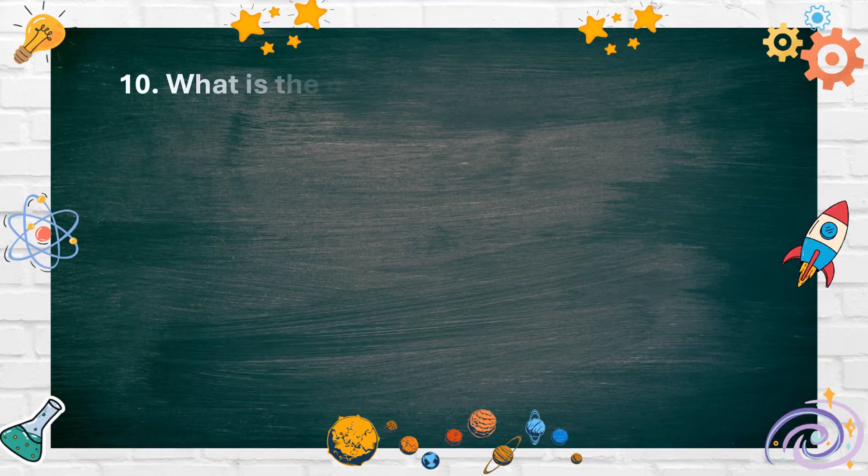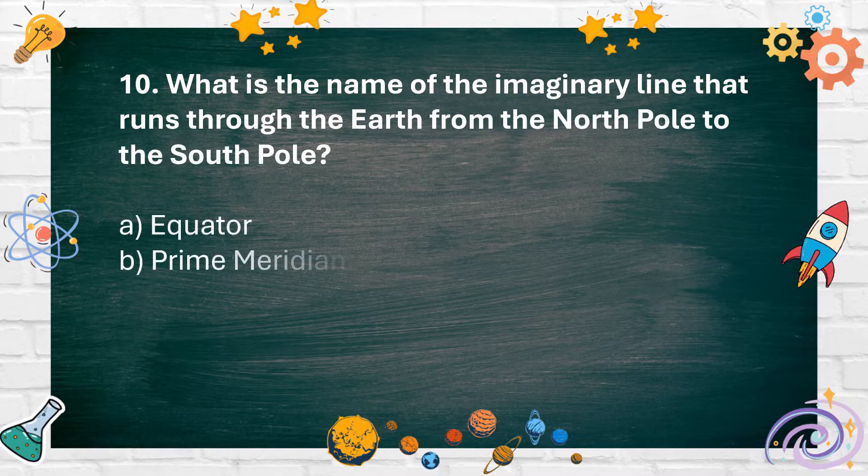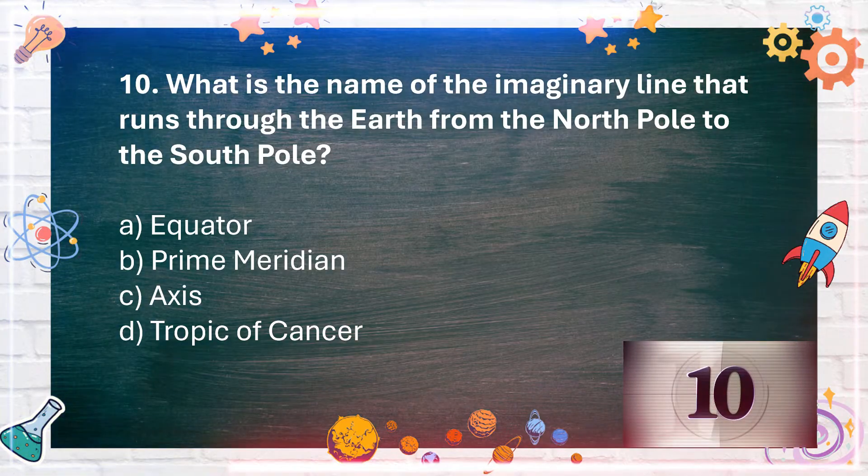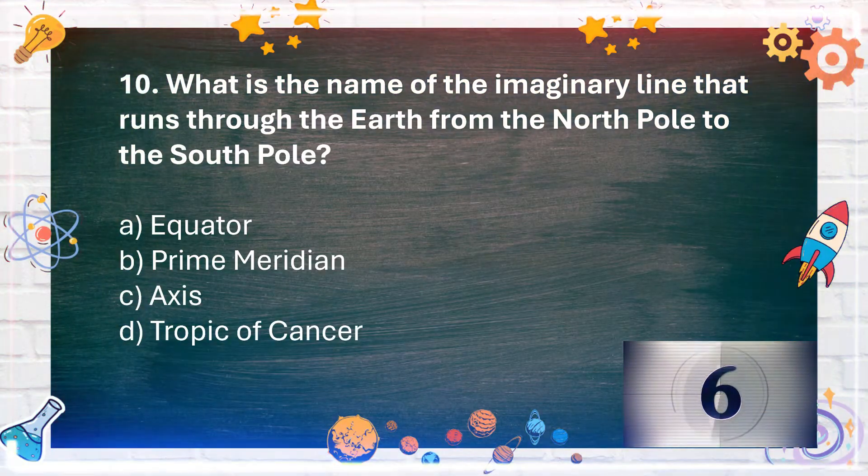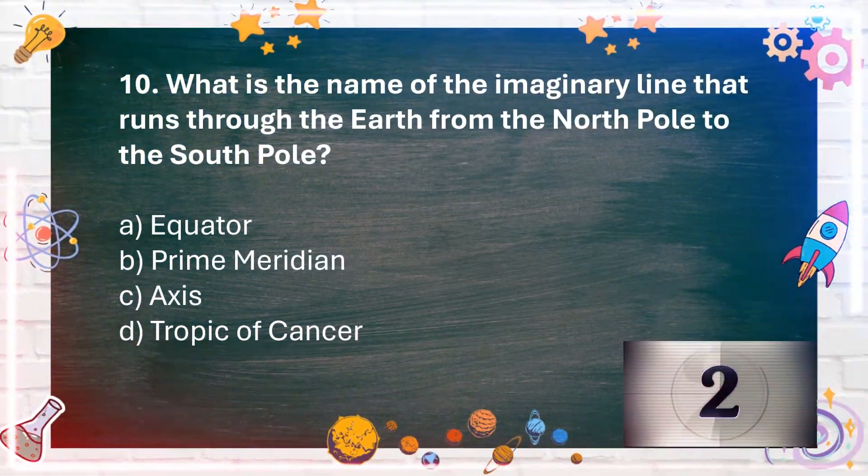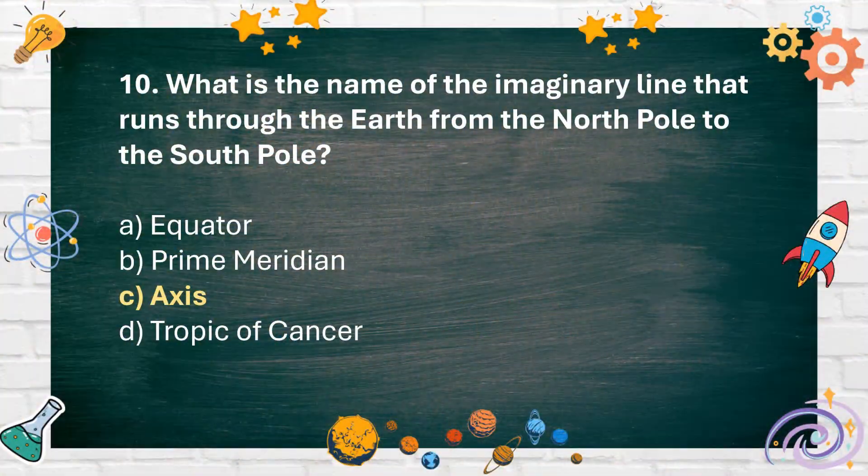Number 10: What is the name of the imaginary line that runs through the Earth from the North Pole to the South Pole? A. Equator, B. Prime Meridian, C. Axis, D. Tropic of Cancer. The answer is C. Axis.